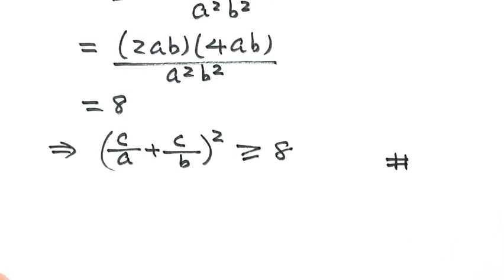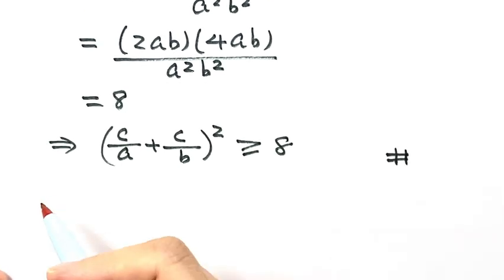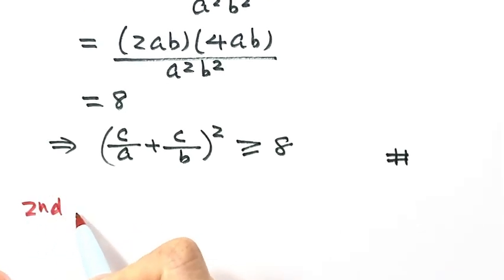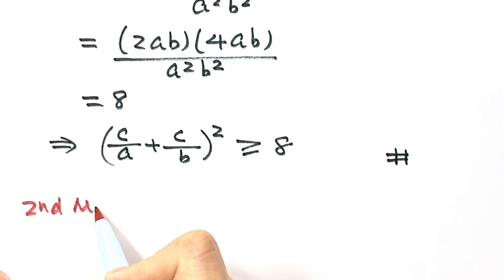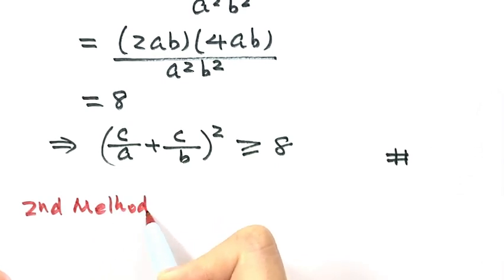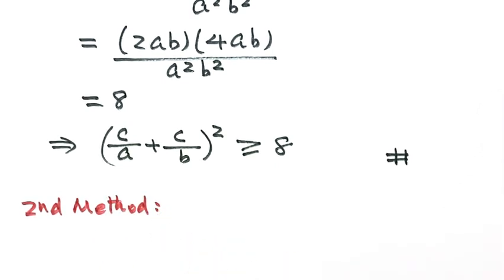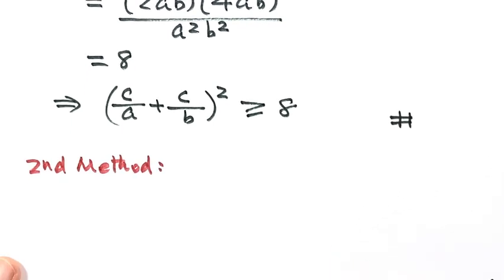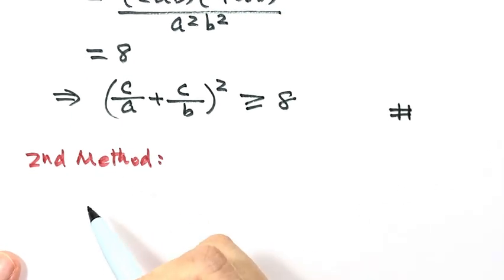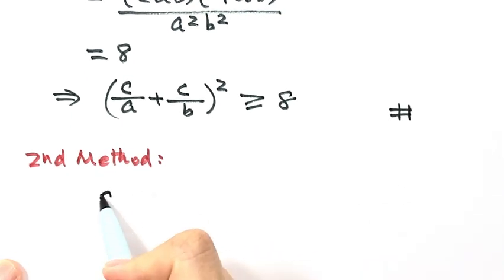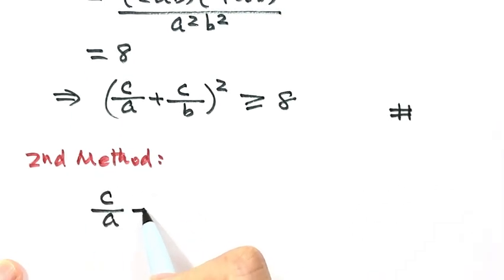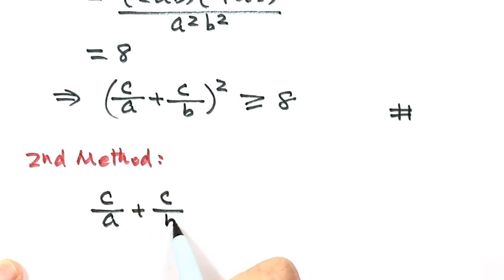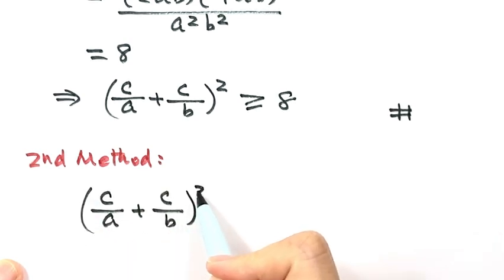Now let's see the second method. For the second method, also let's start from the left-hand side: (c/a + c/b)².